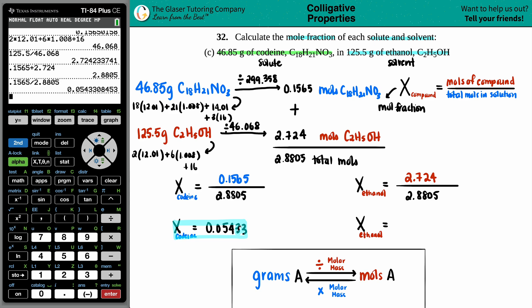Mole fractions do not have any units, so whatever the number you get, that's just the fraction. And then for the ethanol we have 2.724 divided by 2.8805, I get 0.9457.